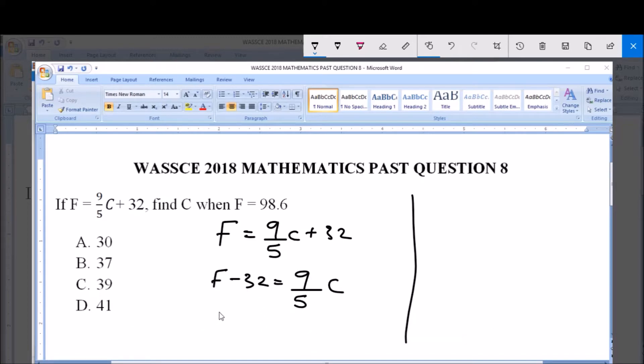Therefore from here we can say that when you cross multiply, 9C is equal to 5 times (F minus 32). And when we divide both sides by 9, we can say C is equal to 5 times (F minus 32) all over 9.